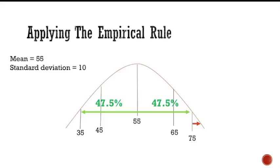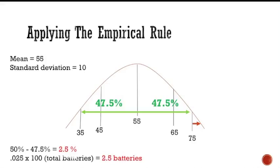Since the data is assumed to be normally distributed, 50 percent of the data is greater than the mean. So 50 percent minus 47.5 percent equals 2.5 percent. This 2.5 percent represents the percentage of batteries lasting longer than 75 hours. Therefore, 2.5 percent of 100 is 0.025 times 100, which equals 2.5 batteries that will last longer than 75 hours.